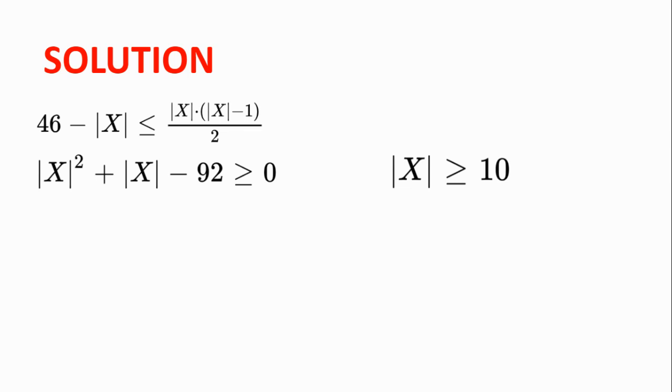And so the number of students in X is at least 10, as if it were 9, we would get 81 plus 9 minus 92, which will be minus 2.